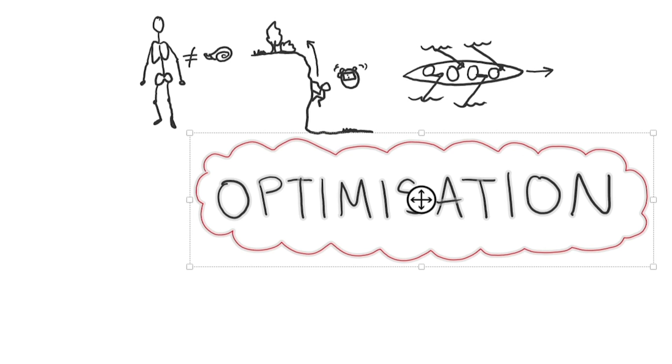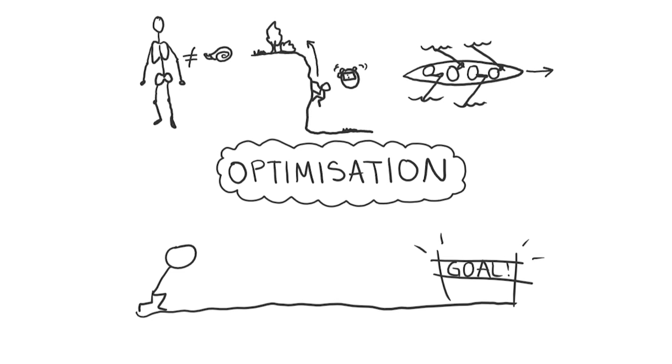What are the commonalities we see across optimisation scenarios? We need a goal first of all and constraints that determine a number of different possible strategies that can get us some way towards that goal.